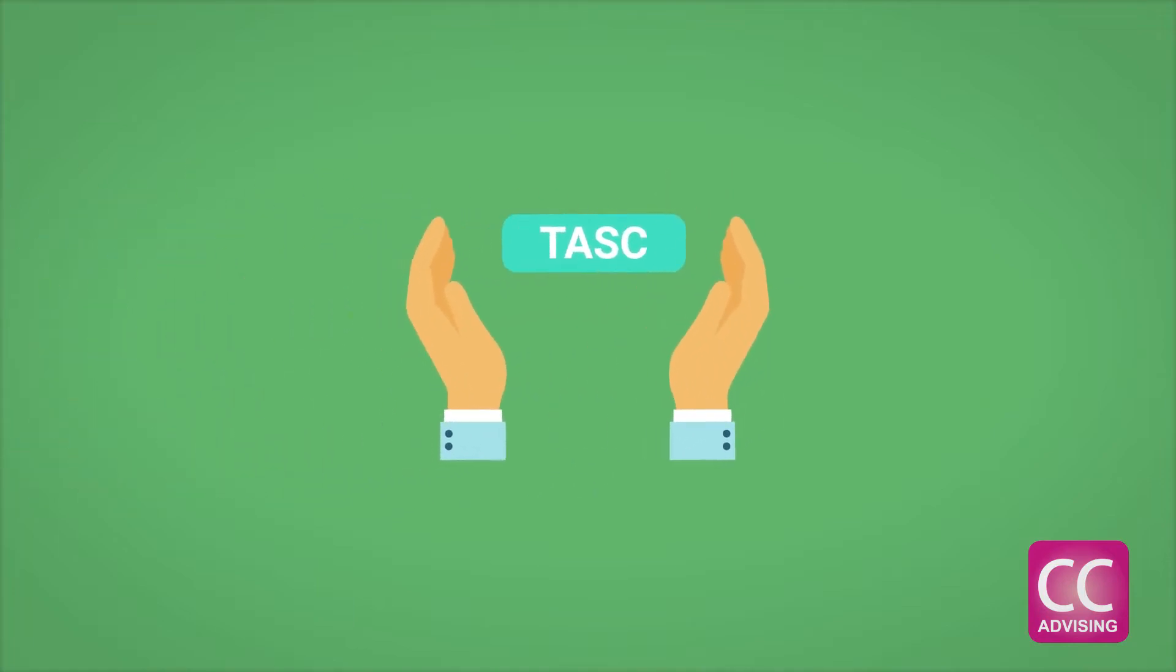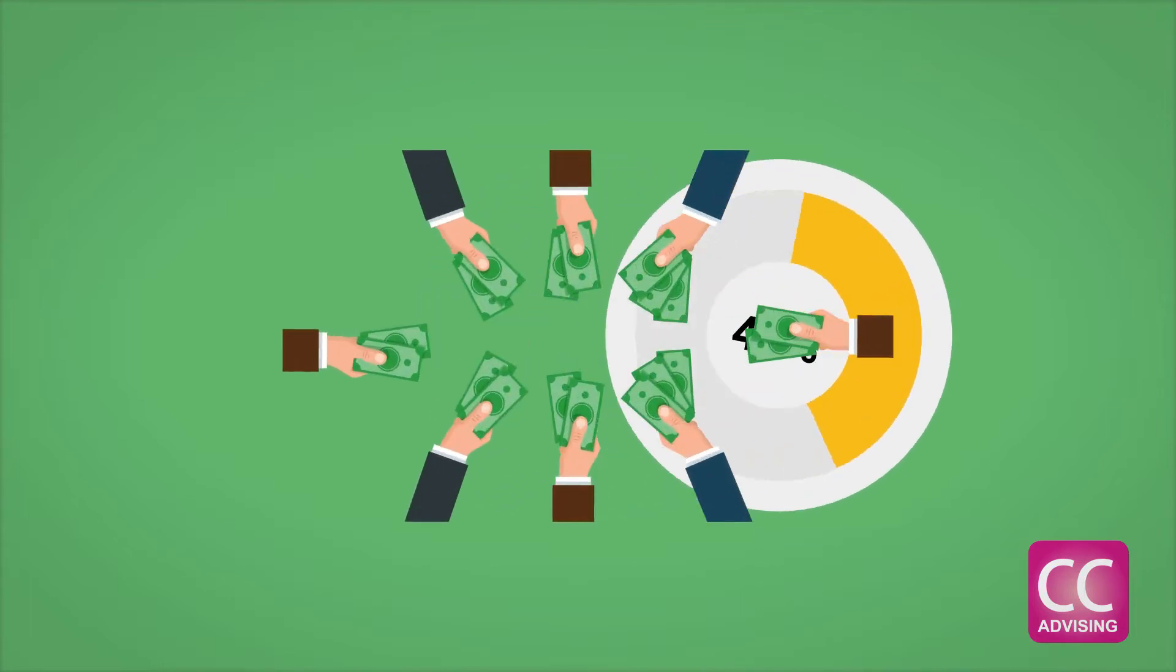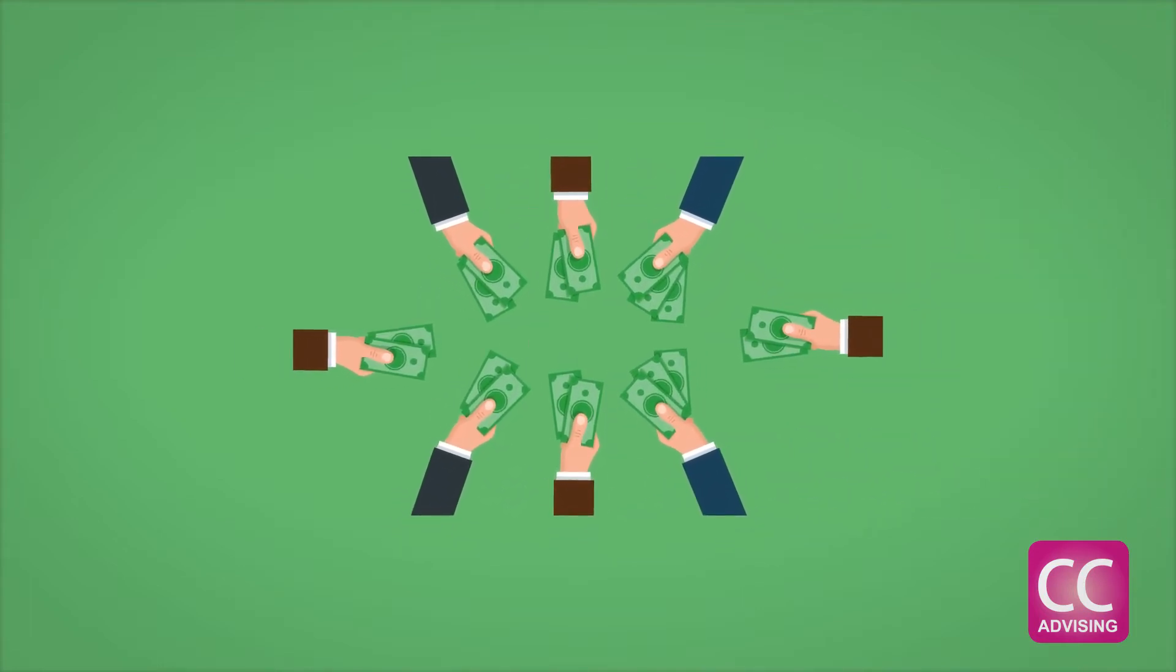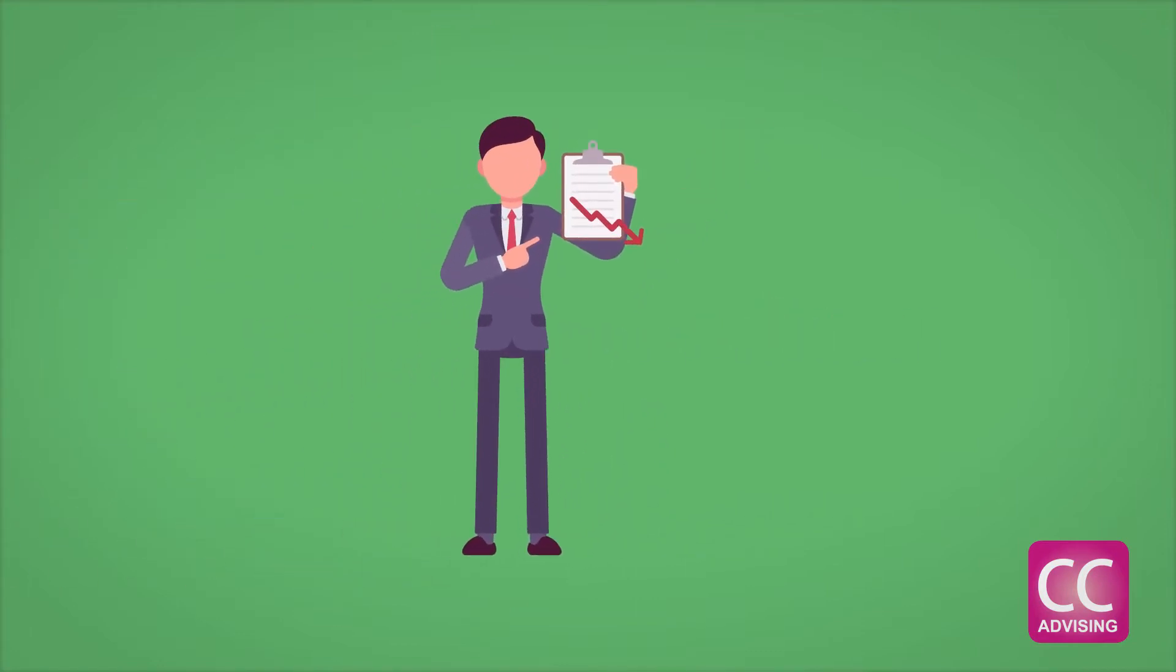One positive thing about Debt Settlement is the fact that it has a slightly higher average success rate over debt management plans, like we talked about previously. According to the TASC, or the Association of Settlement Companies, there's an average 45% success rate of Debt Settlement plans. However, this figure does not take into account the number of people who pay Debt Settlement companies only for a few months, only to bail on the program before all the debt has been paid. When these people are taken into account, the success rate falls to around 34% of people who end up settling their debt in a Debt Settlement program.